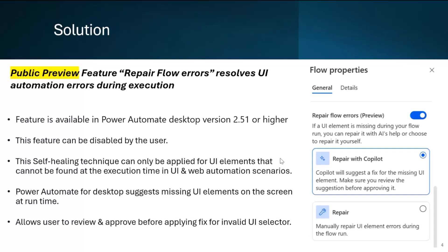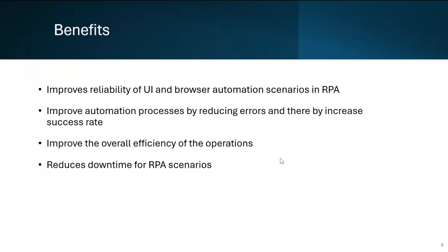The key benefits of Repair Flow Errors are: it improves the reliability of automation by reducing errors, fixing errors increases the success rate and improves the efficiency of operations, and it further reduces downtime for robotic process automation scenarios.